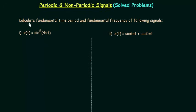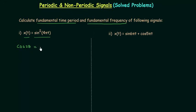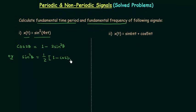In this lecture we will calculate the fundamental time period and fundamental frequency of two signals. Let's start with the first signal: x(t) = sin²(4πt). We already know that cos(2θ) = 1 − 2sin²(θ), or equivalently, sin²(θ) = (1/2)(1 − cos(2θ)).